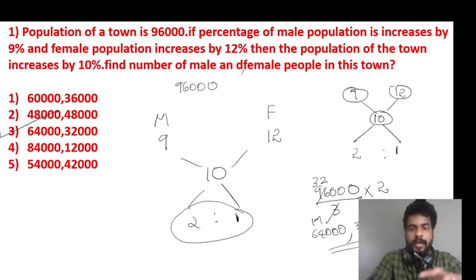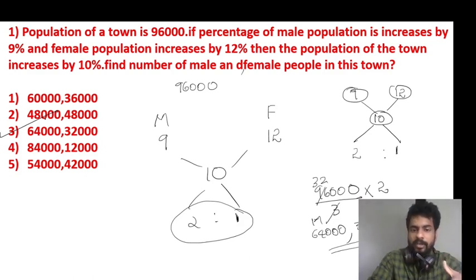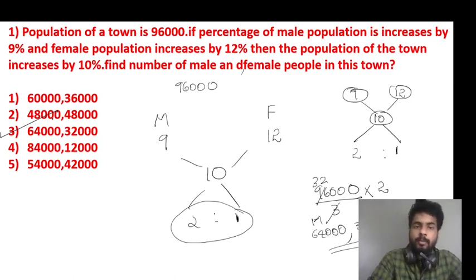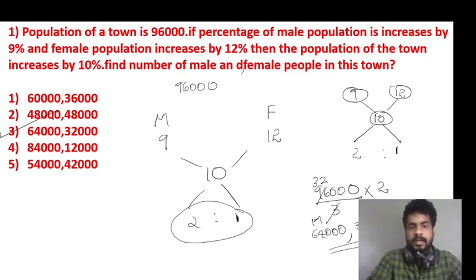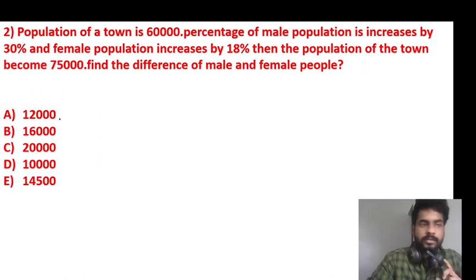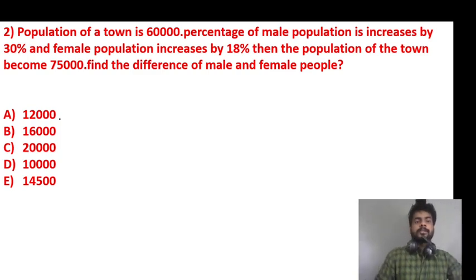So the average: 12 minus 10 is 2, 9 minus 10 is 1. Male to female ratio — total 3 parts, 96,000. 1 part is 32,000. So male is 64,000, female is 32,000.